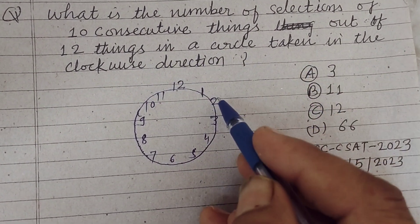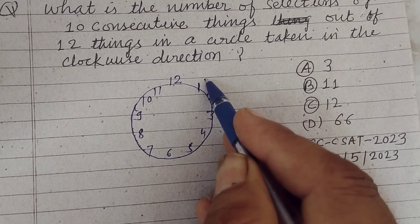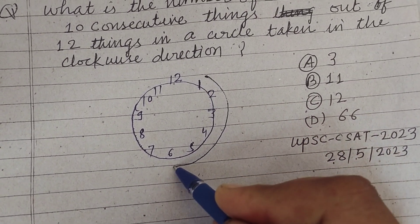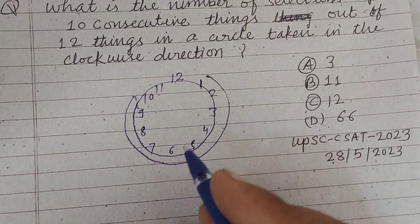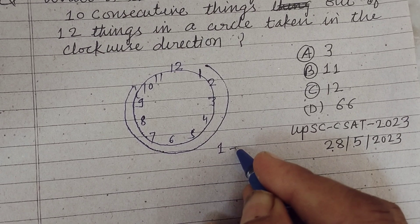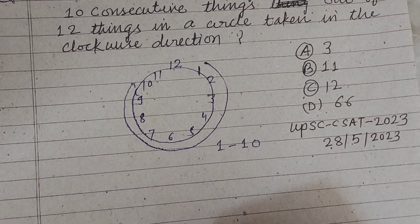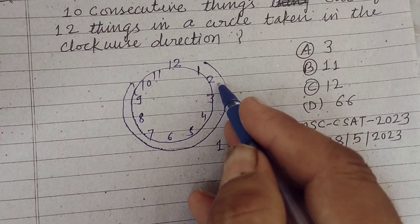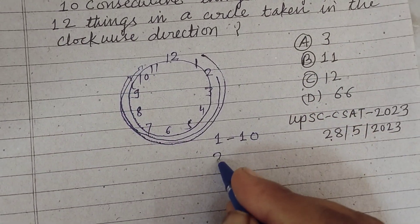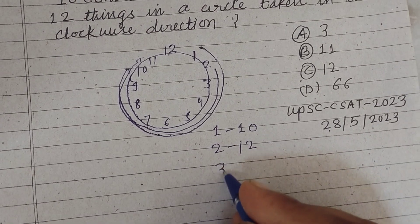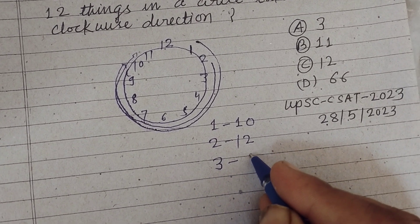Taken in the clockwise direction, so we start from 1 and we take 10 things. So 1 to 10. Okay, first we read 1 to 10. Second, when we start from 2, we reach up to 11. 2 to 11, 3 to 1.